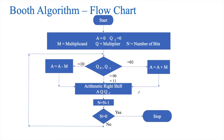The flowchart for Booth algorithm remains the same whether it is a signed multiplicand, a signed multiplier, both unsigned, or both signed — this flowchart is going to remain the same. First, we assign register A to all zeros, Q minus 1 to 0, M as the multiplicand, Q as the multiplier, and N as the number of bits. In the Q register, we check the value of Q0 and Q minus 1. If those two bits are 0-0 or 1-1, we just do an arithmetic right shift of A, Q, Q minus 1, reduce N by 1, and check whether N equals 0.